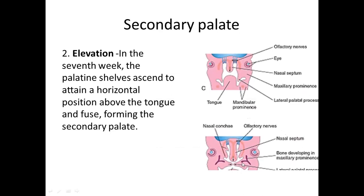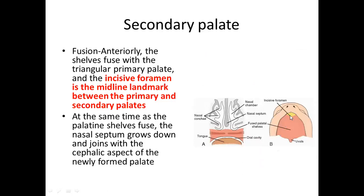Next is the elevation of the palatine shelves. Initially oblique, because of the development and descent of the tongue they become horizontal and start approaching each other to fuse in the midline. The fusion proceeds mostly from anterior to posterior in a Y-shaped manner — between the primary palate and the two palatine shelves. The junction of the primary and secondary palate is marked by the incisive foramen. Simultaneously, the nasal septum approaches downward and fuses with the hard palate but not with the soft palate.